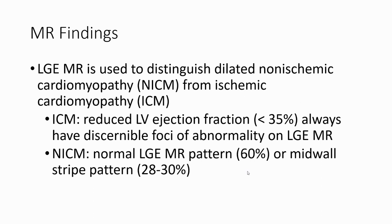In ischemic cardiomyopathy, we can find reduced blood ejection fraction. The late gadolinium enhancement pattern in non-ischemic cardiomyopathy is usually normal in approximately 60 percent of cases, or shows a mid-wall stripe pattern in 28 to 30 percent of cases.